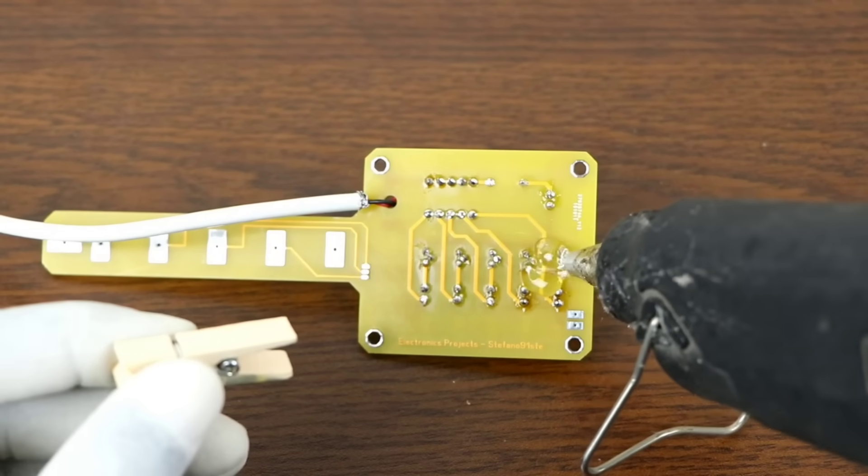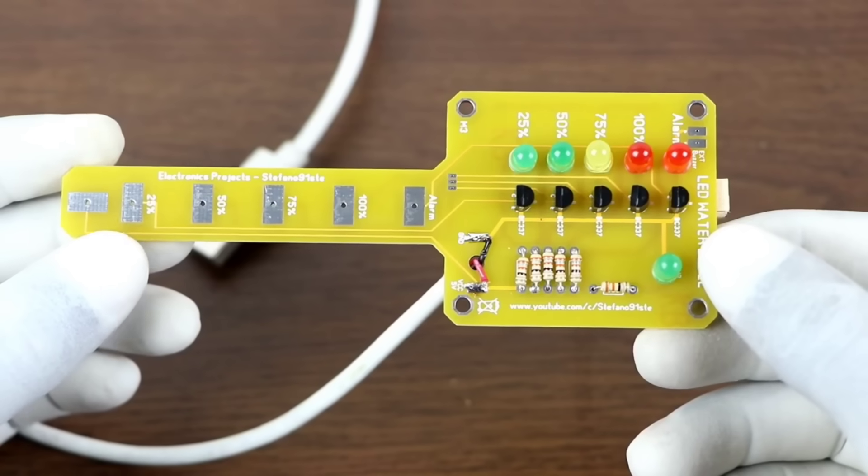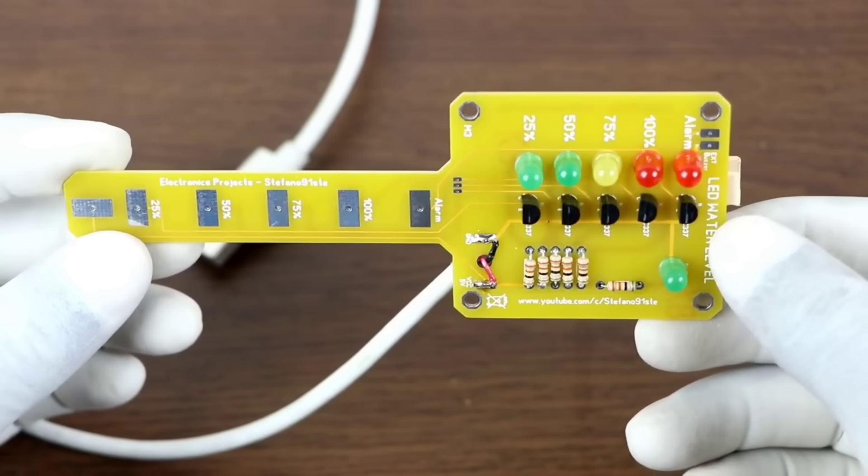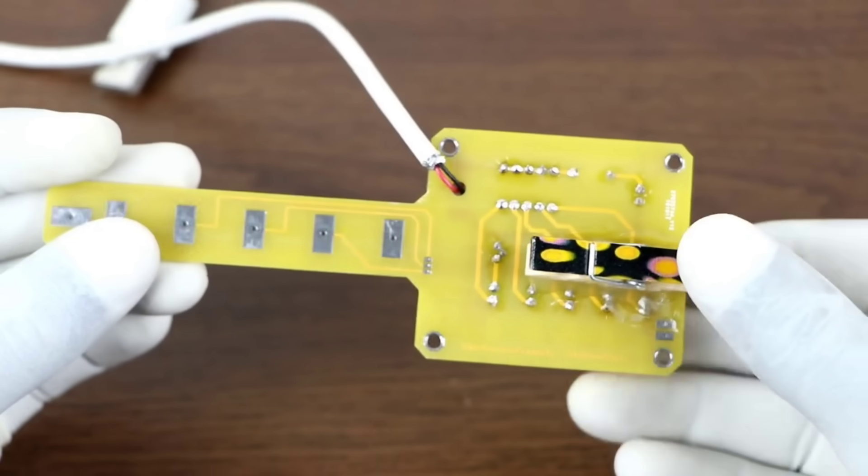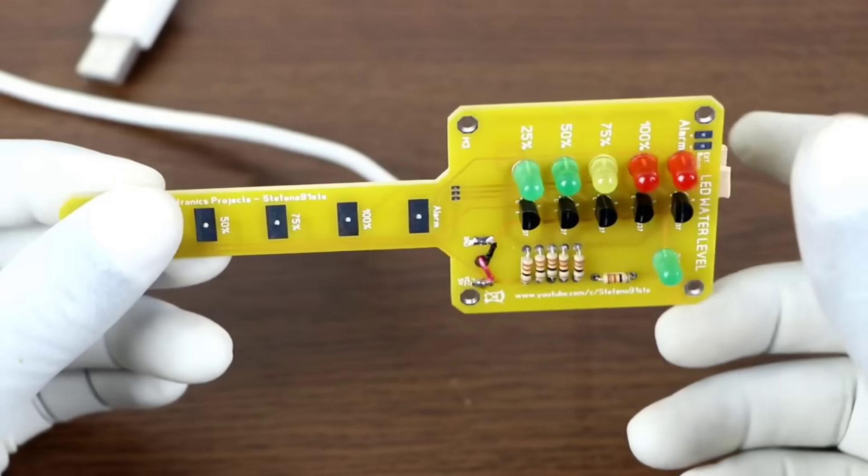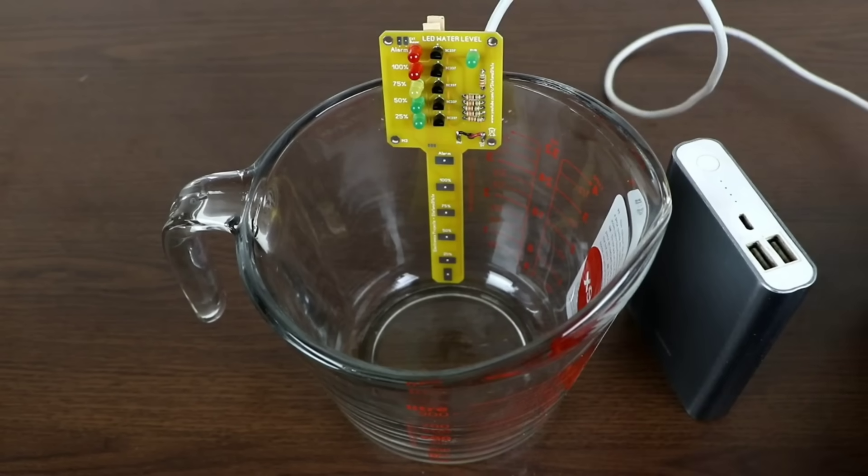And friends, now we'll use a simple hanger clip. Just apply a little instant glue and firmly attach it. This small addition will hold everything neatly in place and make the setup more stable. So with all the components placed correctly, the soldering complete, and the internal sensor design ready, our water level indicator circuit assembly is now finished and ready for testing.